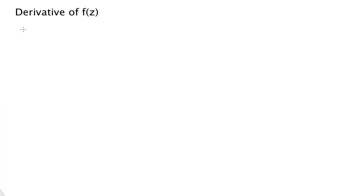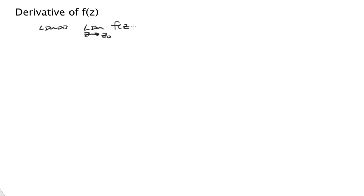Hello and welcome. Today we're going to talk about the derivative of a function of a complex variable. So let's recall where we've been. We've really established limits, and the idea that the limit of z going to z-naught of f of z — we can now establish something about whether this exists.